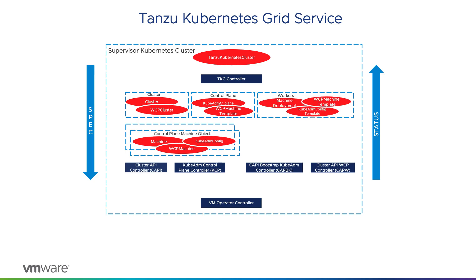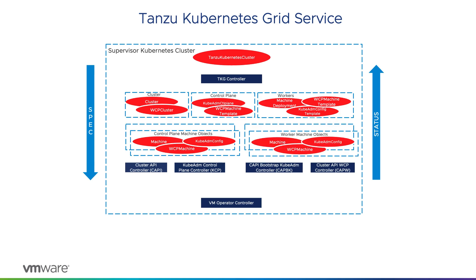Worker nodes still get a WCP machine template resource, but will use a machine deployment object to define the many nodes that might be created as workers. There is actually a machine set object that holds the desired state for the set of machines created for the worker nodes. Much like the built-in deployment object owns an underlying replica set object, which in turn owns a set of pods, the machine deployment defines the machine set, which in turn defines the set of machines that become workers.